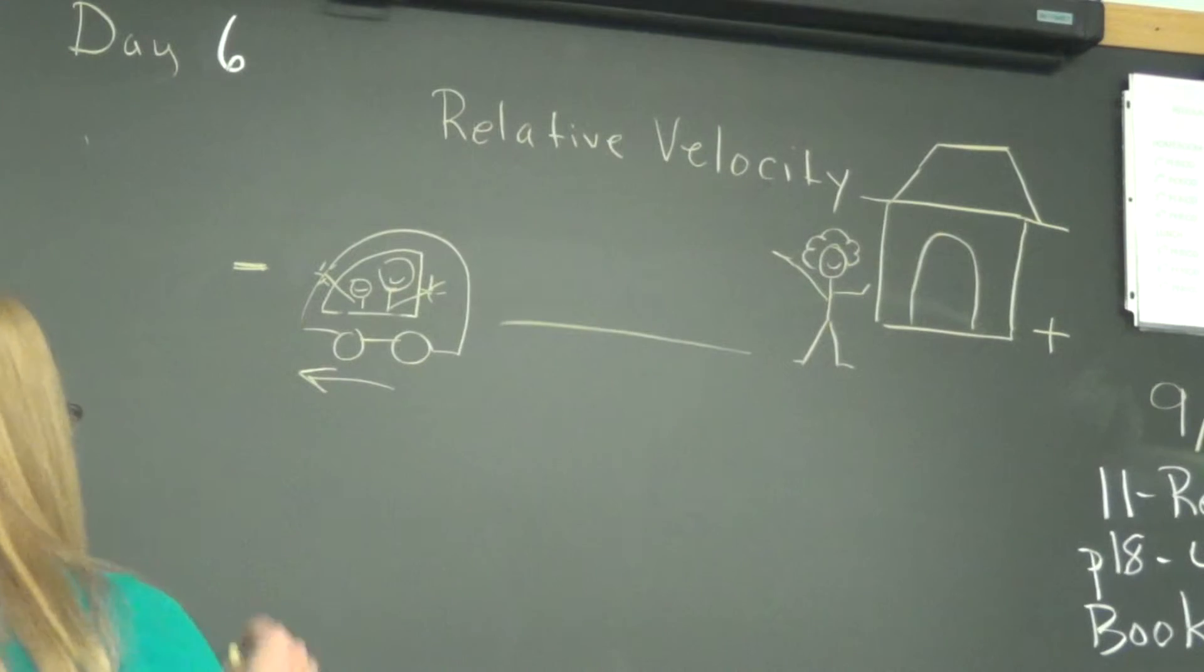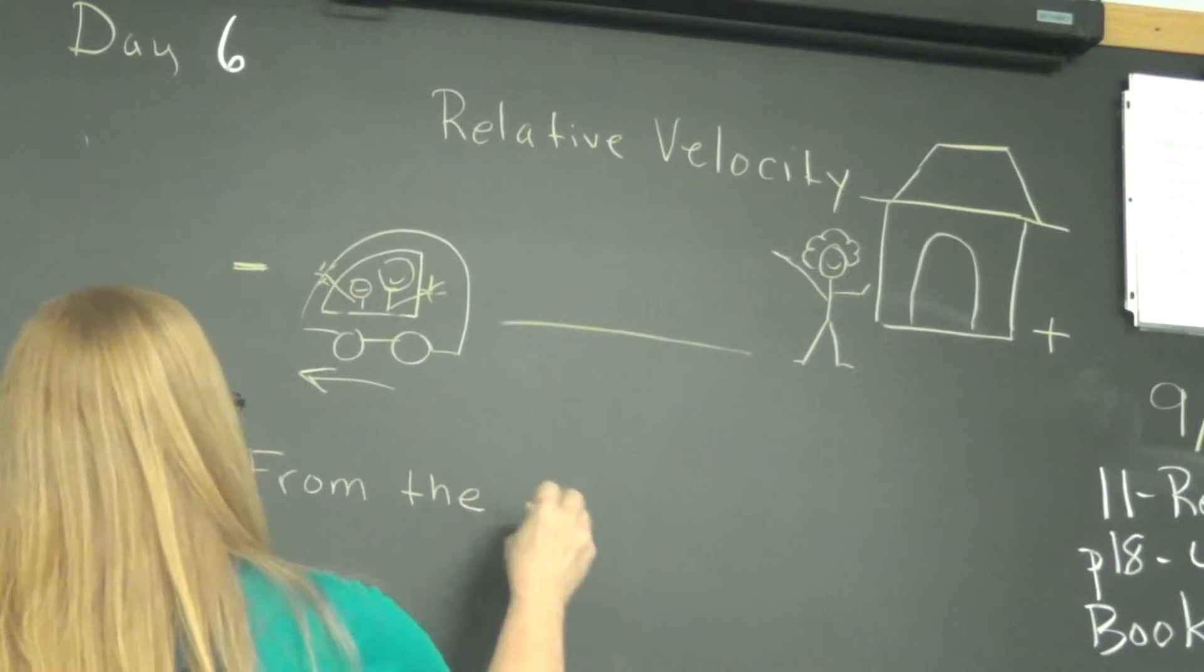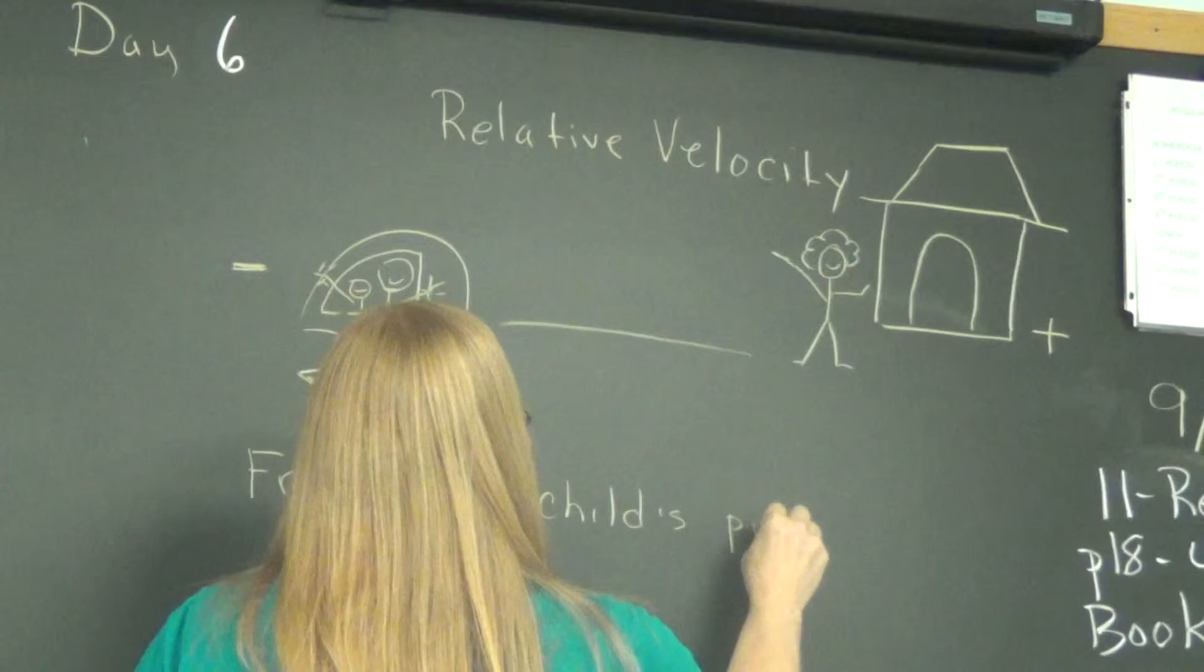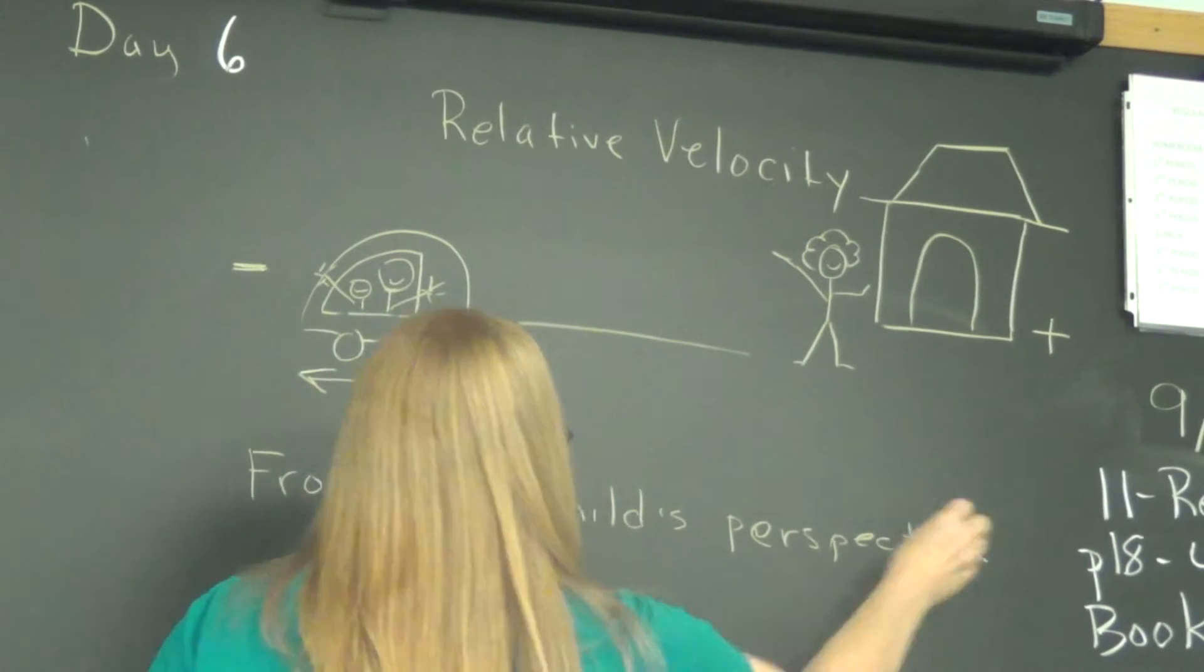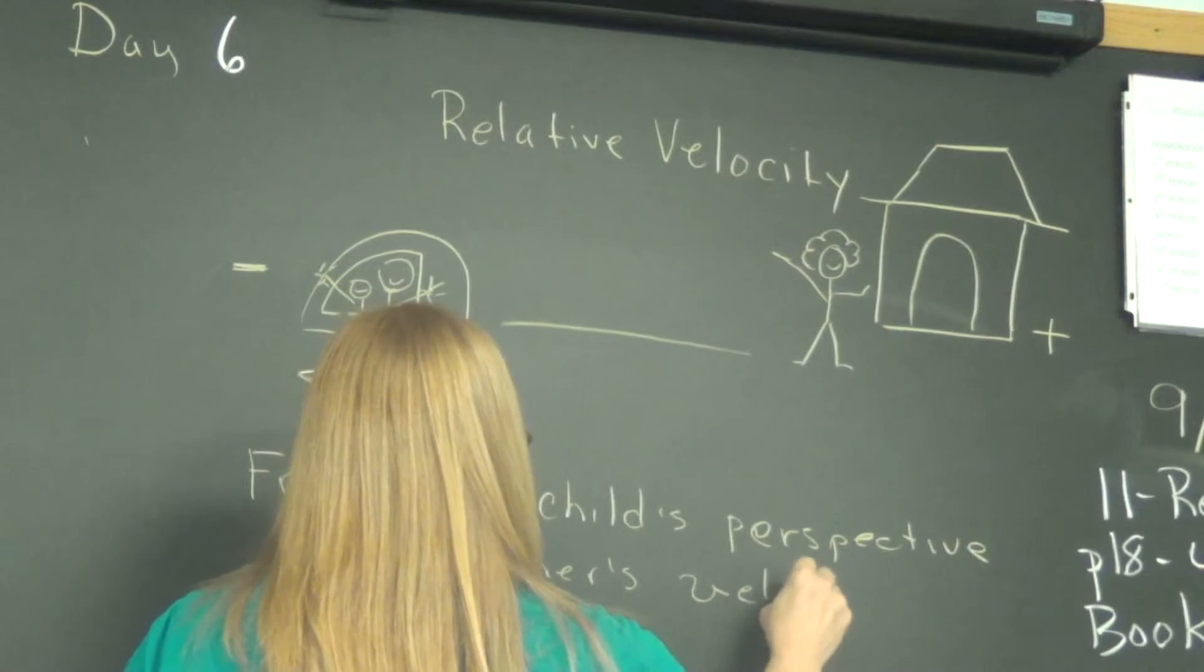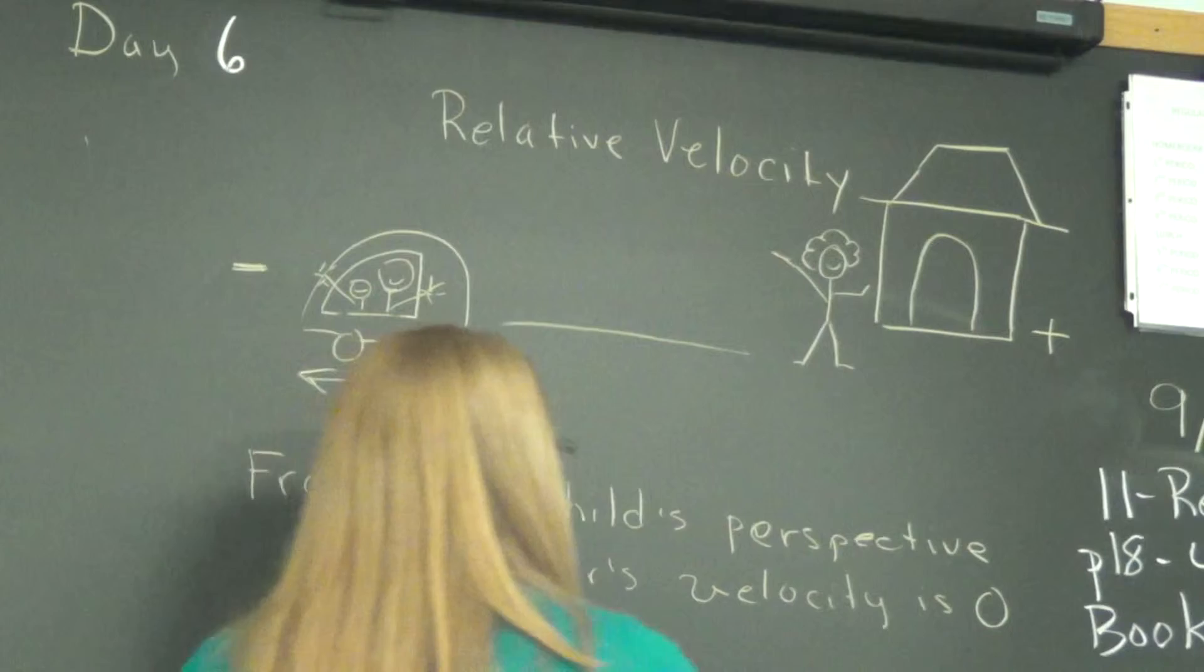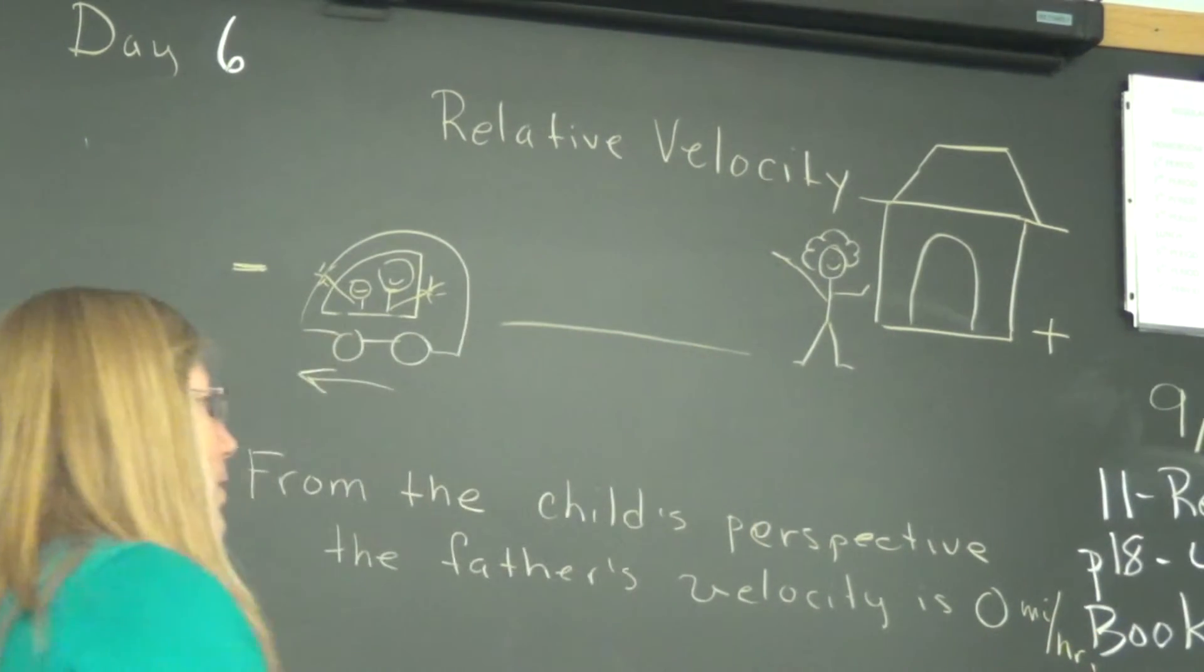So let's make a note of that. From the child's perspective, the father's velocity is zero. I don't know what kind of precision. We'll just say zero miles per hour. We'll go with some English units. So zero miles per hour.